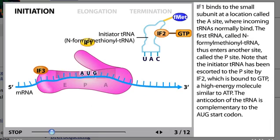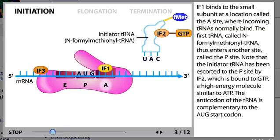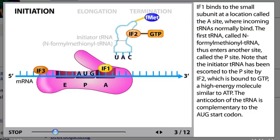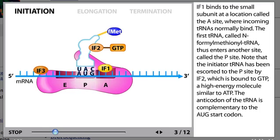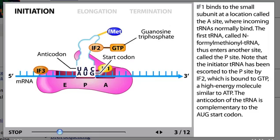IF1 binds to the small subunit at a location called the A site, where incoming tRNAs normally bind. The first tRNA, called N-formylmethionyl-tRNA, thus enters another site called the P site. Note that the initiator tRNA has been escorted to the P site by IF2, which is bound to GTP, a high-energy molecule similar to ATP. The anticodon of the tRNA is complementary to the AUG start codon.